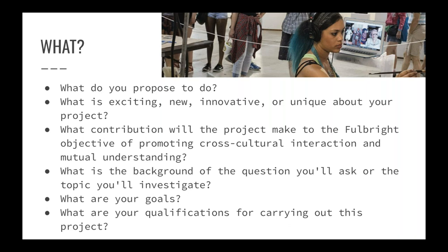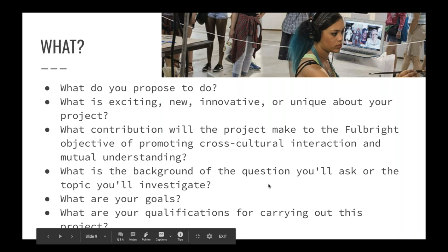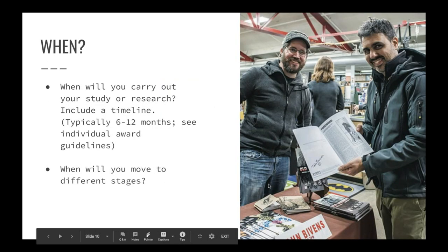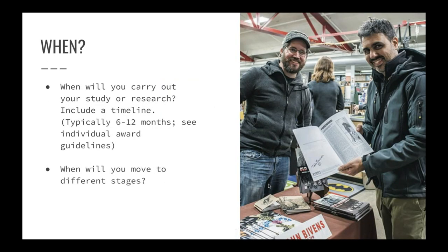What are your goals and qualifications? You'll need to justify why you are the right person for this. For 'when': when will you carry out your study or research? You'll want some sort of timeline. Check the individual award, as each has different guidelines — you want to make sure you're tailoring the application to that specific set of guidelines. Also address when you will move through different stages of the process you're proposing.